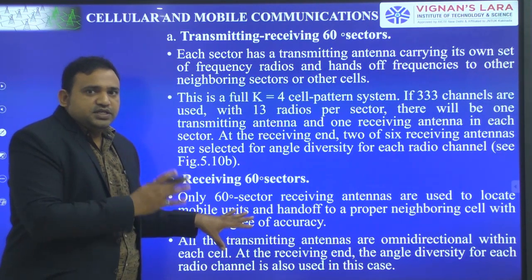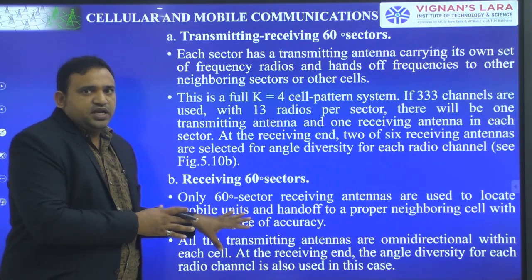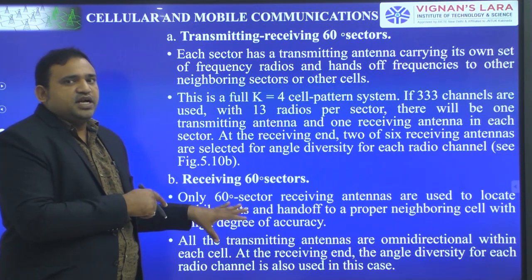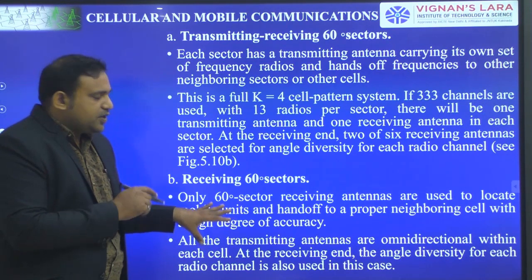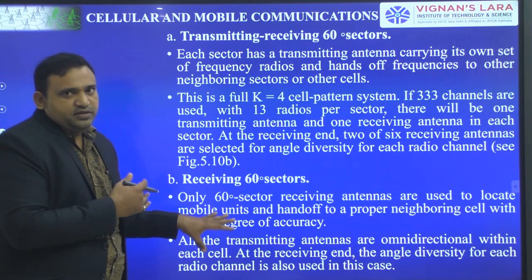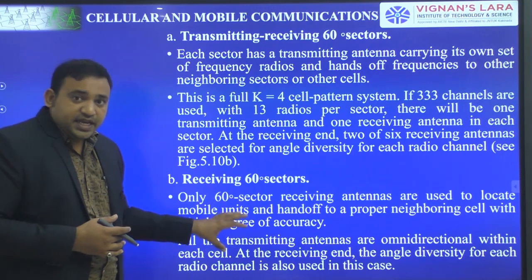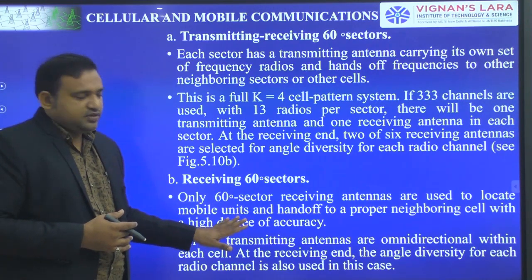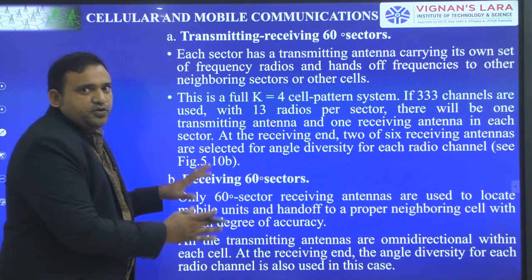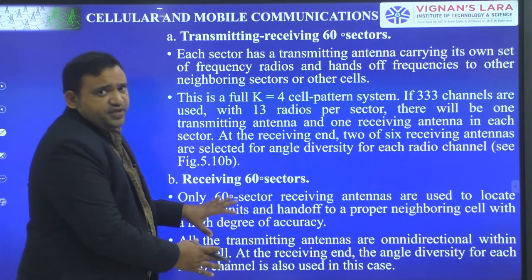Here we are concerned about only the receiving antennas. The receiving antenna is a directional antenna. Since the topic is about directional antennas for interference reduction, we are bothering about only the receiving antenna — that is, the directional antenna of the 60-degree sector.